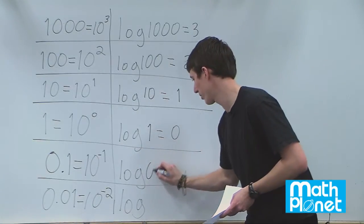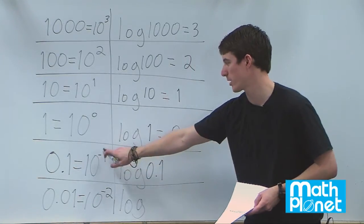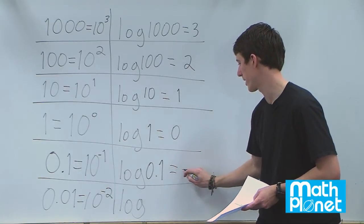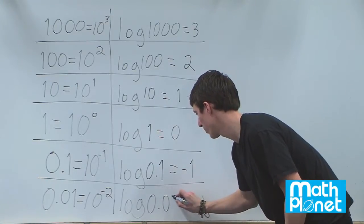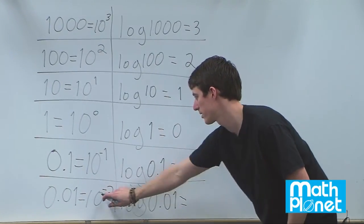So here we have log of 0.1 and now I'm just reading off the exponents. So that's just going to be negative 1. Finally log of 0.01 is just negative 2.